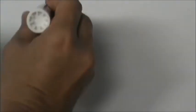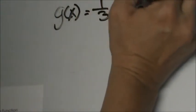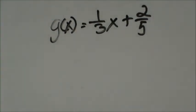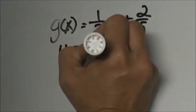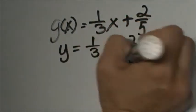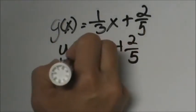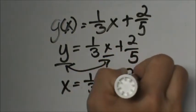The next example is g(x) is equal to one third x plus two fifths. This one has some fractions in it, so let's talk about how to work with fractions. We're going to do the same steps: replace g(x) with y, then switch x and y positions. So x is equal to one third y plus two fifths.